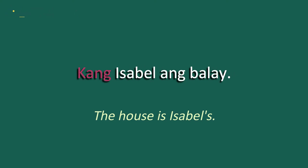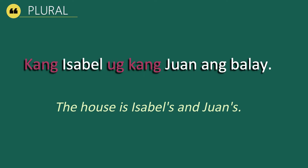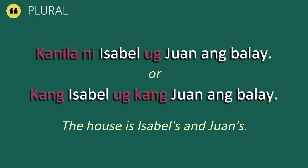Moving on to the plural form: Kanila ni Isabel og Juan ang balay, meaning 'The house is Isabel's and Juan's.' Or we can say Kang Isabel og kang Juan ang balay. Our case markers here are kanila ni and kang og kang, placed before the noun. Isabel and Juan are personal names, og means 'and,' ang means 'the,' and balay means house.